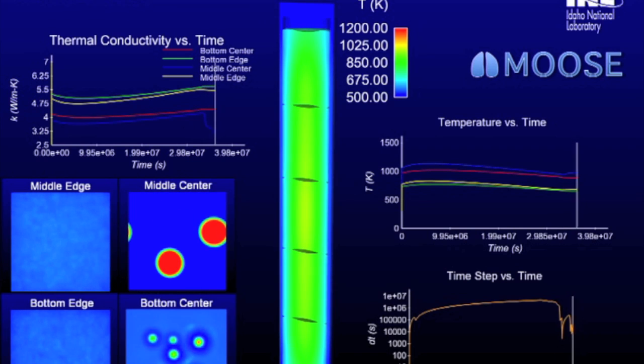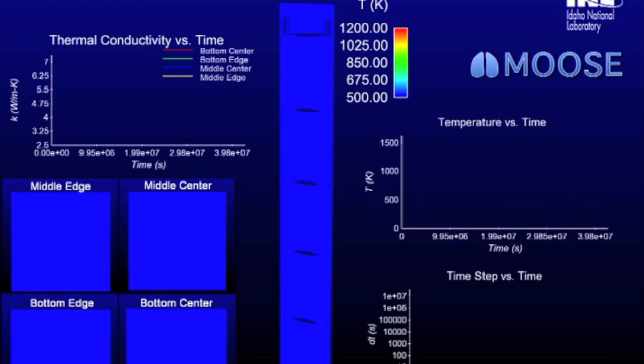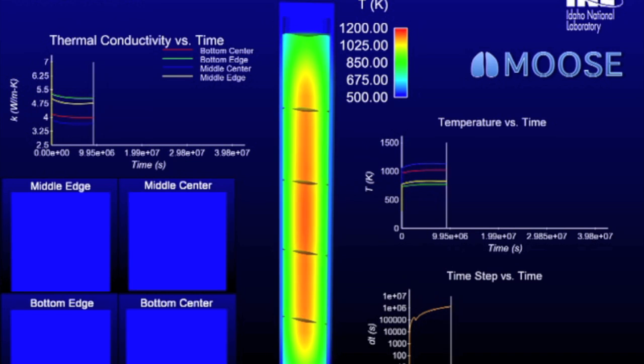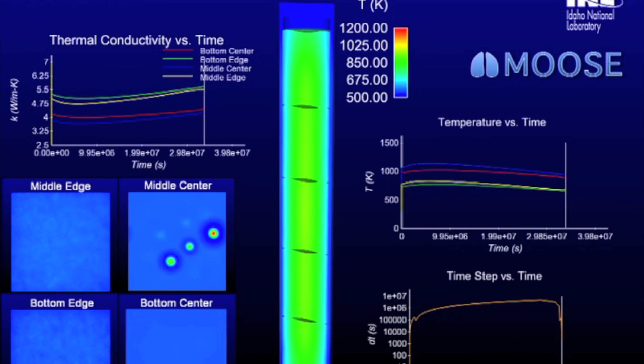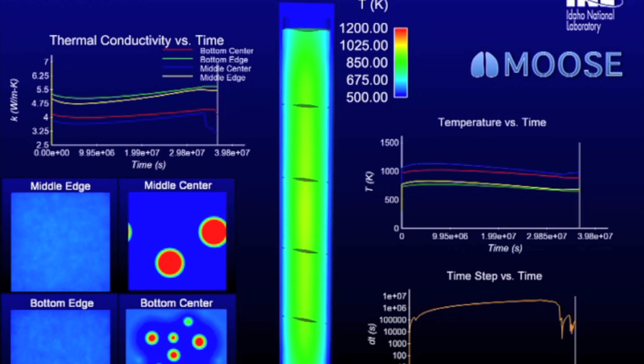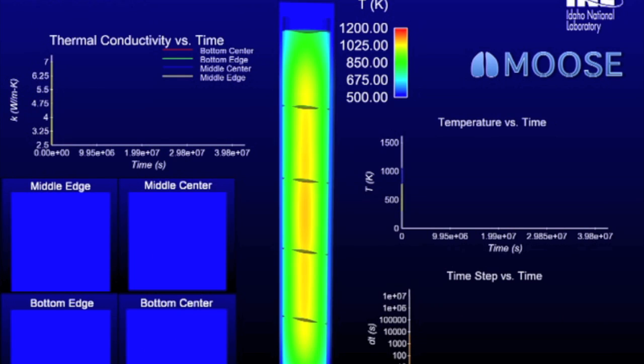On the bottom left, there's four different microstructure positions that are going to be represented: in the center of the middle pellet, on the outer edge of the middle pellet, and on the center and outer edge of the bottom pellet. And what those are going to show is how the structure of the fuel down on the micrometer level is actually going to be changing while the fuel's in the reactor.